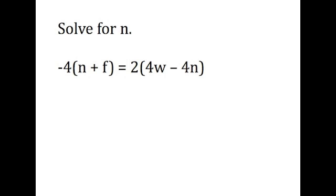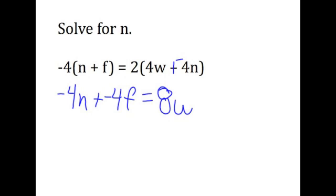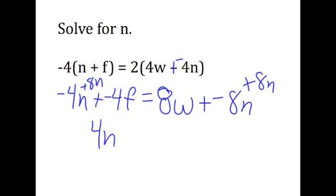Here's our second literal equation, and we're solving for n once again. I get negative 4n plus negative 4f is equal to 2 times 4w, which is 8w. You know I like to do the definition of subtraction, so I get plus negative 8n. To get all the n's together, I'm going to add 8n to both sides. Negative 4n plus 8n is 4n. At the same time, I'm going to add 4f to both sides. These go away, property of opposites.